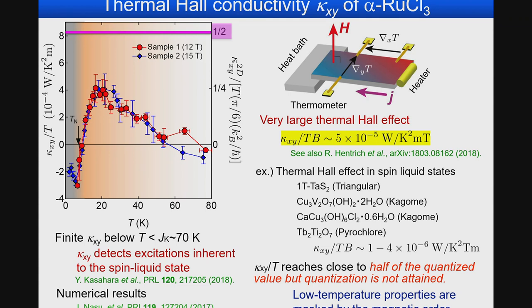The 2D thermal Hall conductance κ_xy divided by temperature is plotted in units of the quantized value, where one-half corresponds to half-quantization. Unfortunately, in the standard geometry, κ_xy reaches close to the half quantized value but quantization is not fully attained because low-temperature properties are masked by phonon contributions. We could not observe the half-quantized thermal Hall conductance in this geometry.